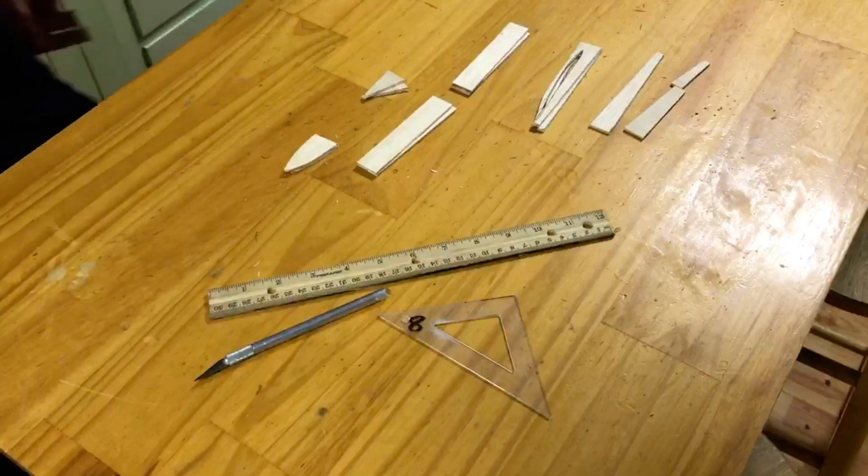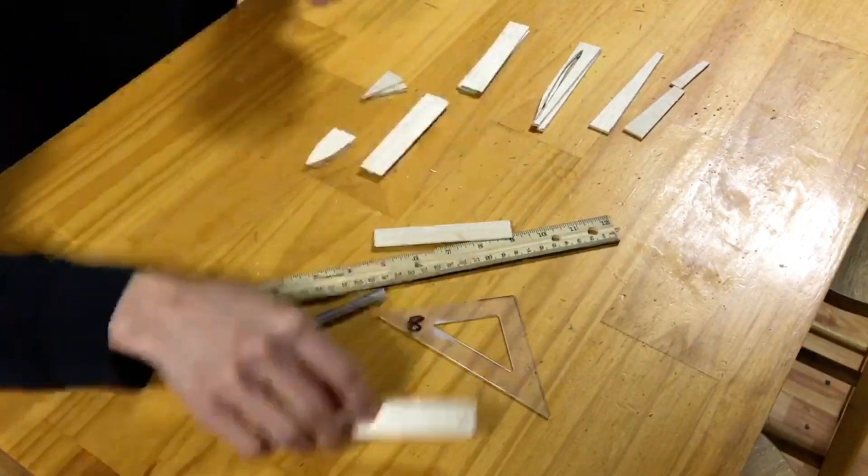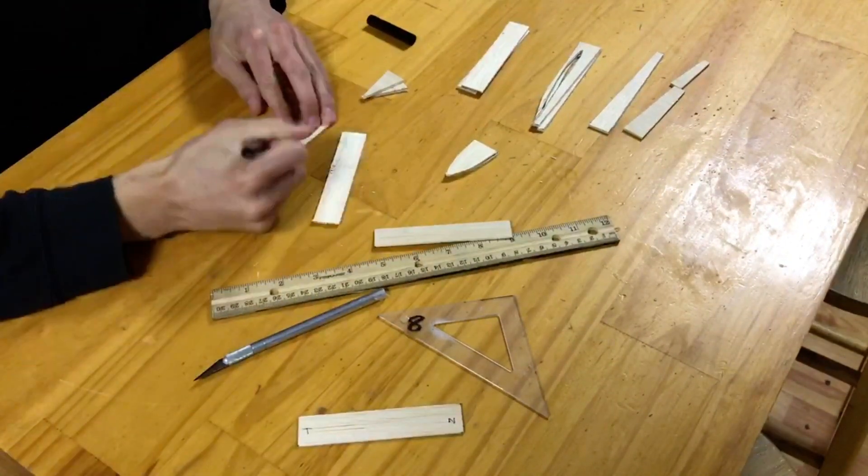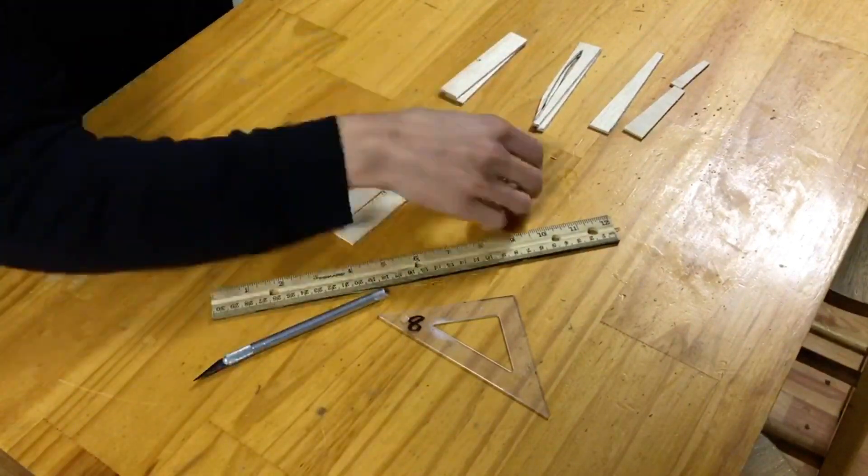This next step is rather short and simple. You see the side and bottom plates look strikingly similar, so I'm just writing S or B on them, respectively, to make sure I don't get them mixed up.